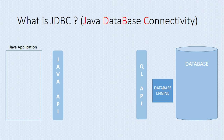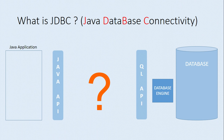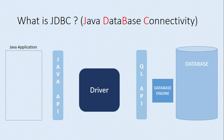Here is the big question: how can this problem be solved? On the left-hand side I have the Java application with Java representation, which is not understood by the database. The database only knows the query language representation, which is not produced by the Java application. We need something that converts Java representation into query language representation — and Java has given the answer to this question: a driver. With the help of a driver, I can convert my Java representation into query language representation which is understood by the database.